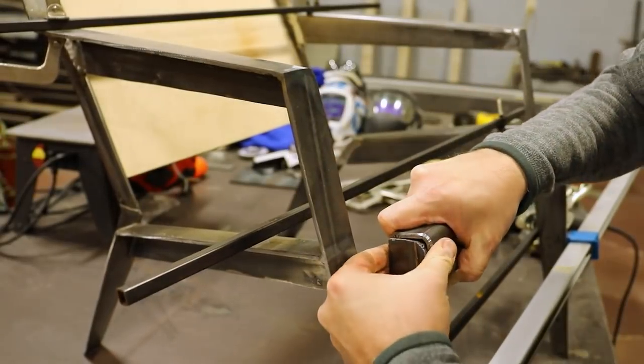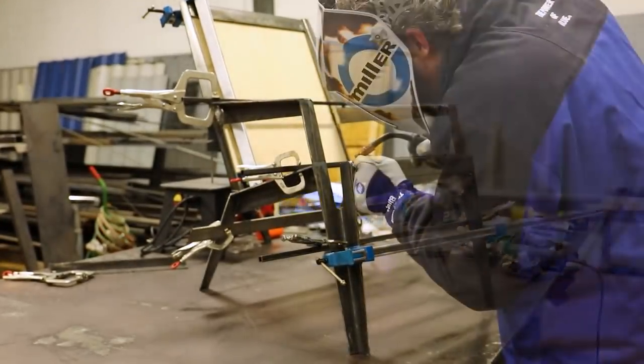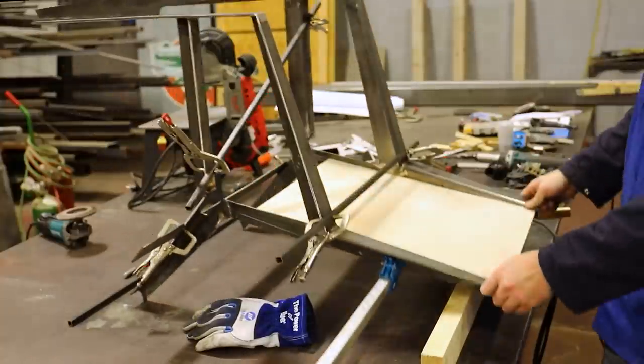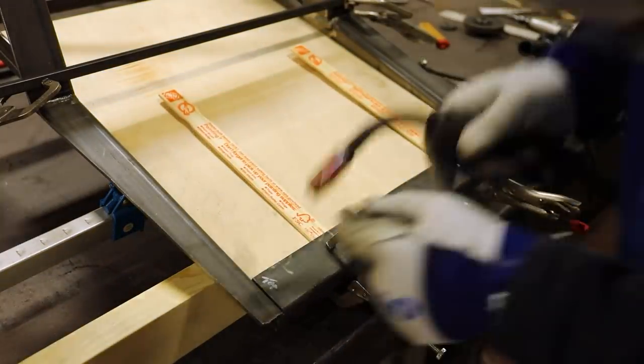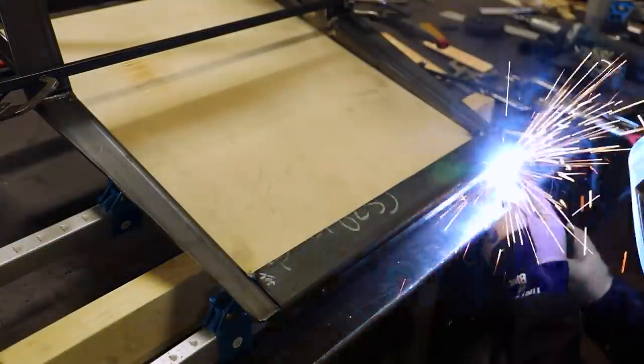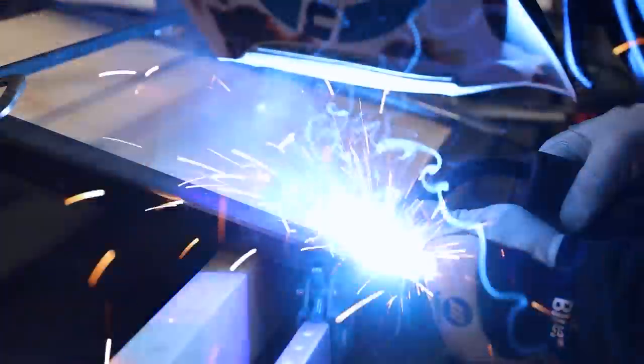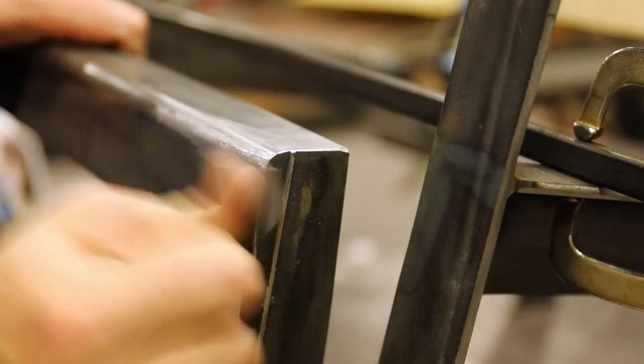With the mirrored sides complete, the cross members could be placed and welded at the front and top of the chair. The middle cross member would have to wait until the layup of the cedar seat and seat back was complete. I made sure that these cross members were square. All of the seams were filed and sanded smooth.